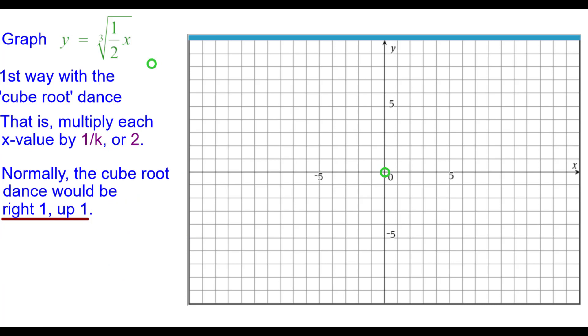Normally the cube root dance is right one up one, but for ours it is going to be right two up one. Two times the x coordinate one is two. The y coordinate remains unaffected. So plot two comma one.